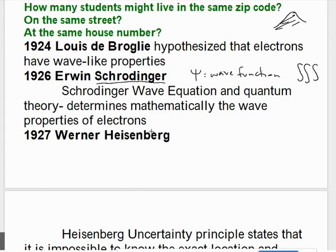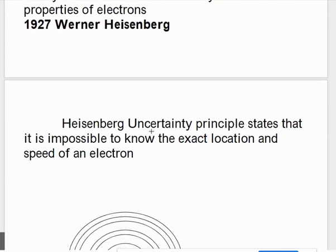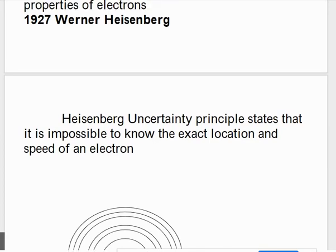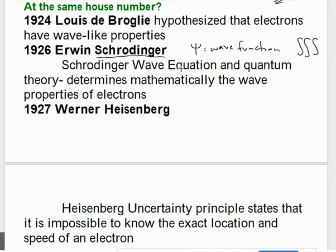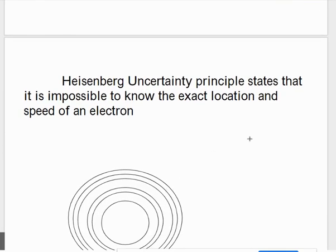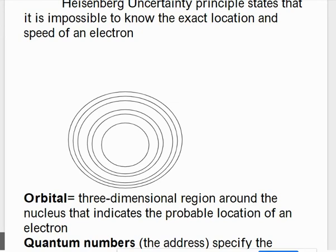Heisenberg in 1927 said that we can't know the exact location and the speed of the electron at the same time. If you want to look up Schrödinger's cat, it kind of goes with this idea of not being able to know the location and the speed at the same time. If you look up on Minute Physics, they have a minute-long video on it.